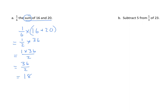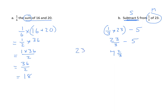Subtract 5 from 1 third of 23. We need to pay close attention to order here because we're subtracting. The 5 is our subtrahend, so 1 third of 23 is our minuend and must come first. So we have: 1 third times 23 minus 5, which equals 23 thirds minus 5. Changing 23 thirds to a mixed number gives 7 and 2 thirds, minus 5, and we get 2 and 2 thirds.